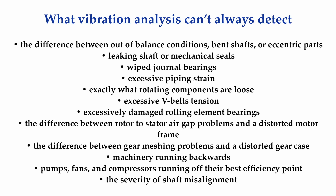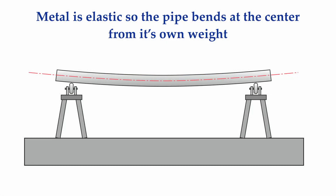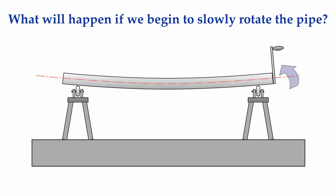Before we explore this in more detail, let's talk a little bit about the behavior of shafts. Here we have a long piece of pipe supported on two roller stands. If the pipe was infinitely stiff, this is exactly what we would see. But metal is elastic and the pipe is not infinitely stiff. Rather, what we would see is the pipe bending or sagging in the middle from its own weight.